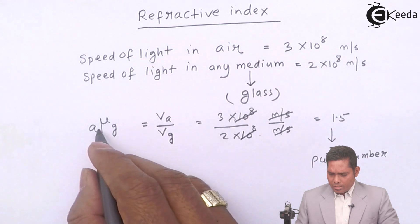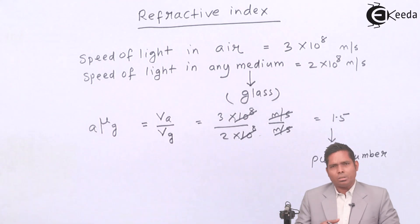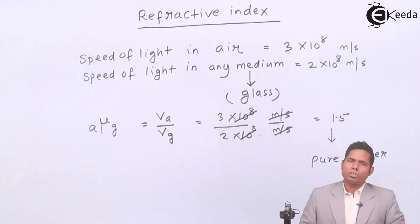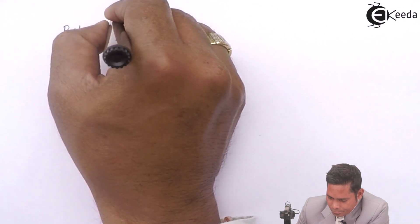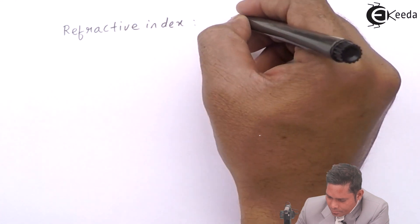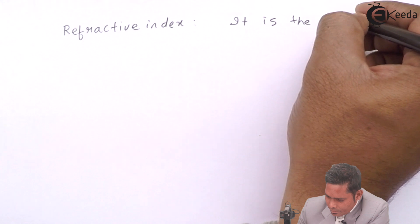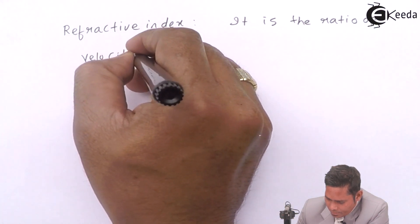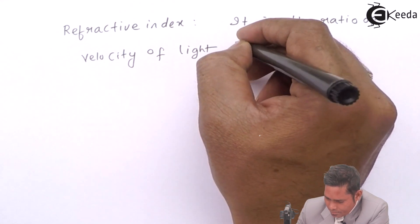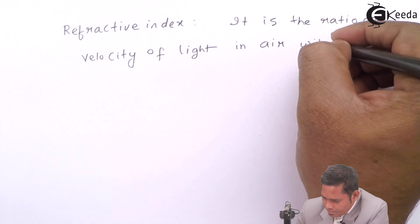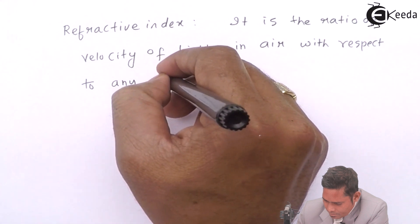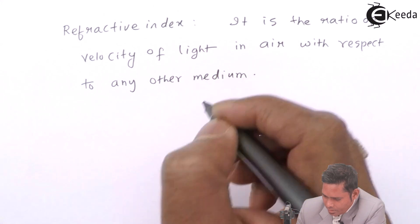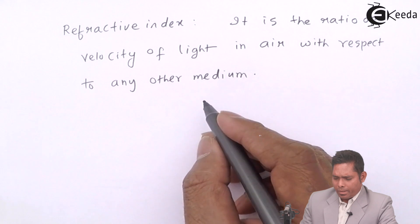The refractive index of any medium with respect to any other medium is basically the ratio of the velocities of light in the two media. Now we will understand and write the definition of refractive index. When measured with respect to air, the refractive index we get is called the absolute refractive index.